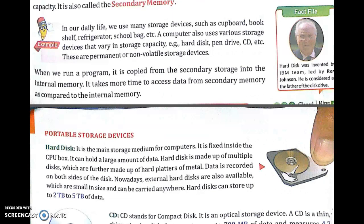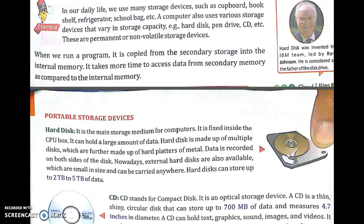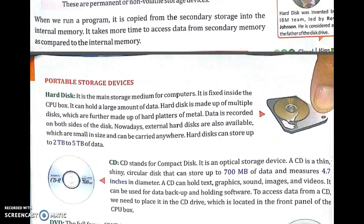Hard disk was invented by an IBM team led by Johnson, who is considered the father of disk drive. Hard disk is the main storage medium for computers. It is fixed inside the CPU box and holds a large amount of data. Hard disk is made up of multiple disks, which are further made up of hard platters of metal. Data is recorded on both sides of the disk. Nowadays, external hard disks are also available, which are small in size and can be carried anywhere. Hard disk can store up to 2 TB to 5 TB of data.